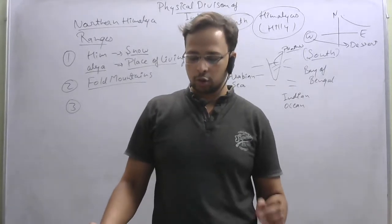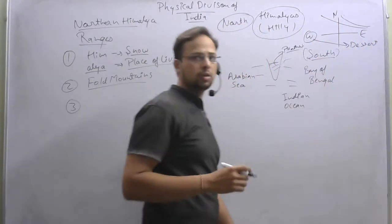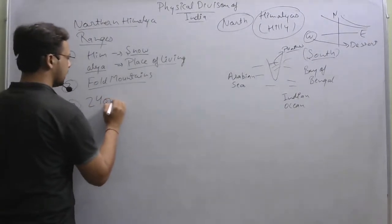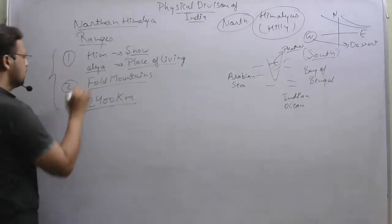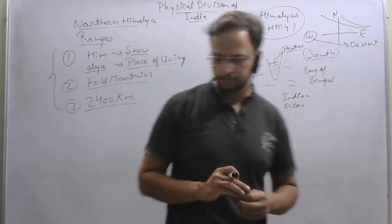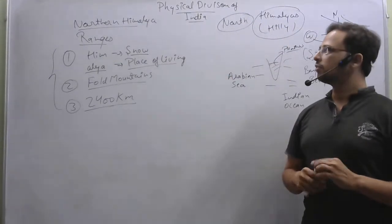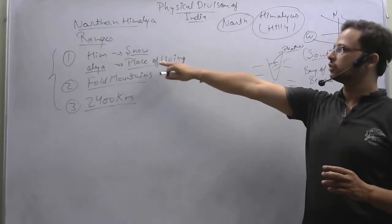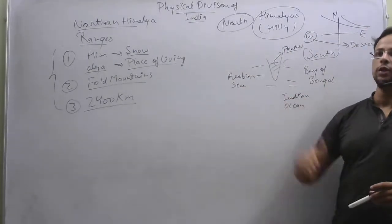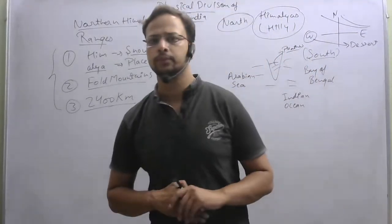The Himalayas extend from the north-west to the north-east along India's border and run about 2400 km. The total Himalayan range size is 2400 km. You have to write these points in your copies so that you will be able to understand and learn them, as they are important.